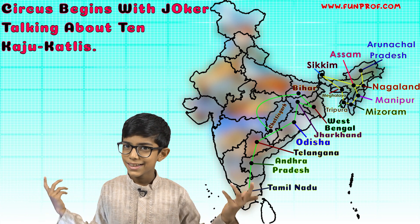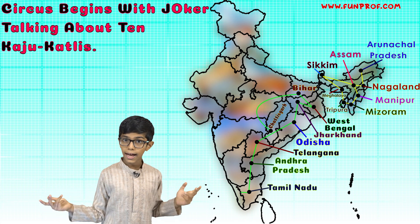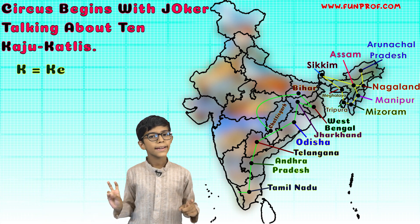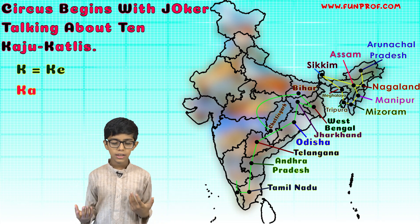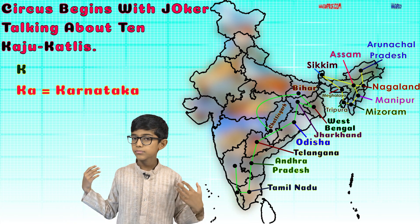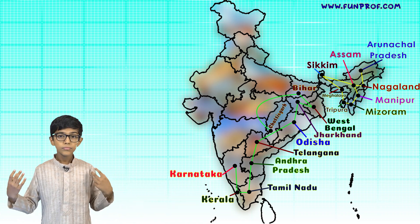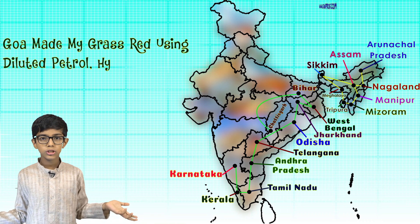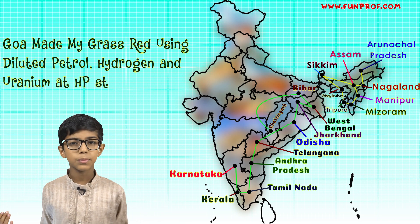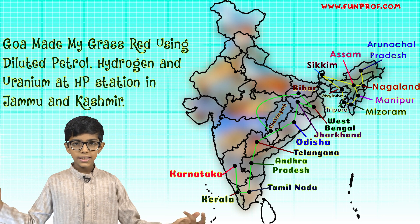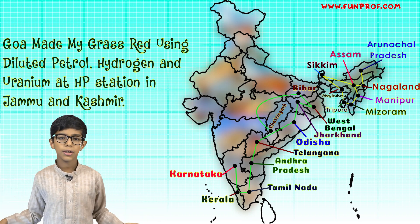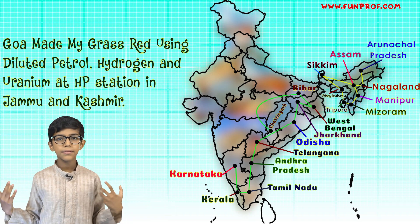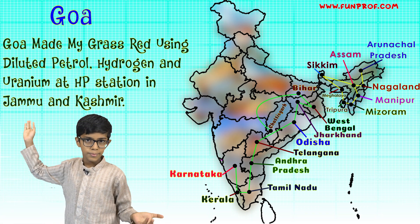Tamil Nadu starts from T, and tense also starts with T. Then ten kajukatlis — K for kaju and K for Kerala. Now the remaining part of the mnemonic is: Goa made my grass head using diluted petrol, hydrogen and uranium at HP station in Jammu and Kashmir. Goa stands for Goa only.